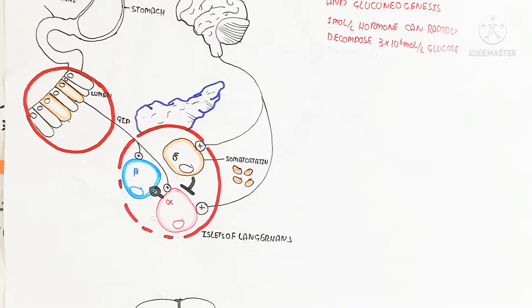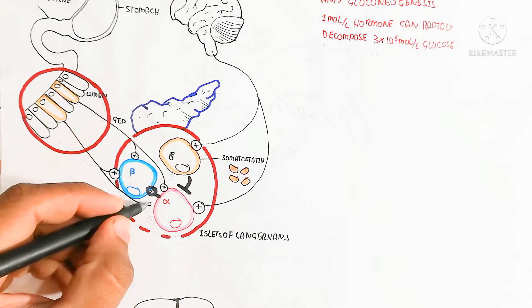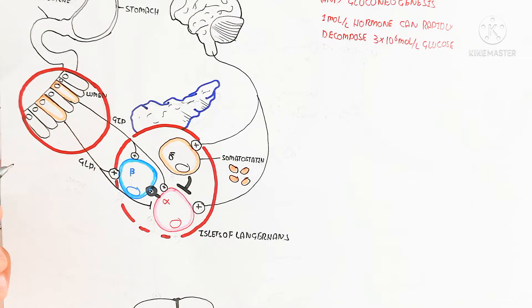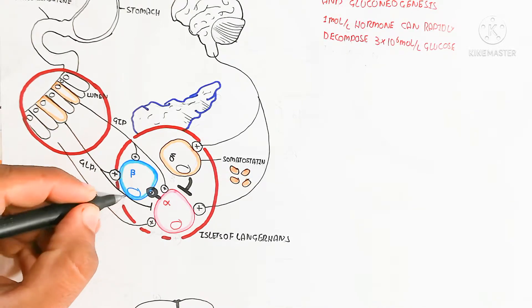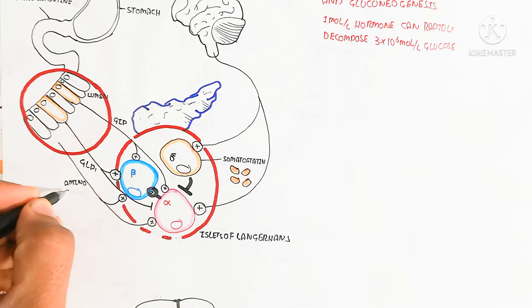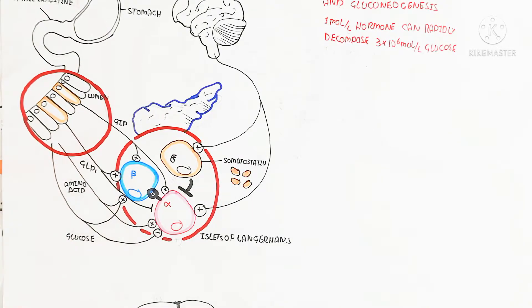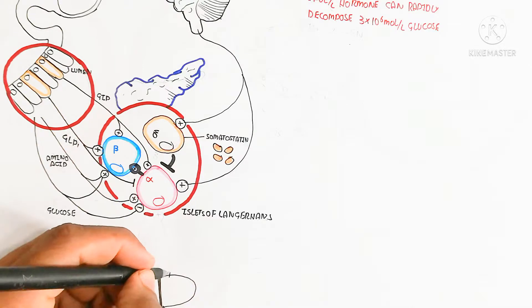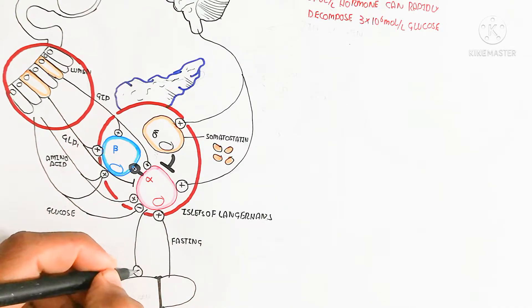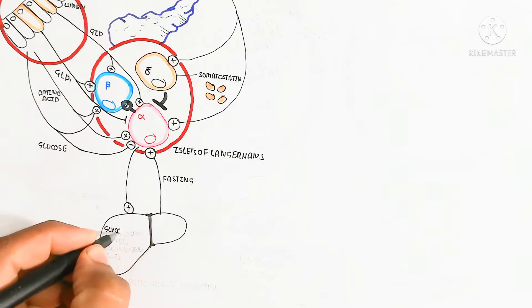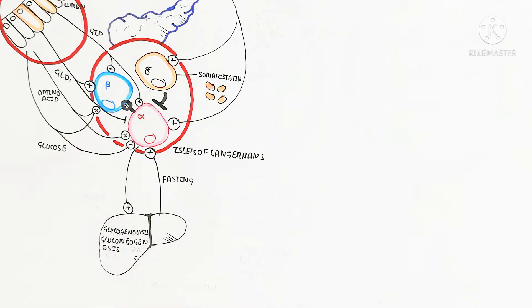In the fasting state, GIP will stimulate both alpha cell and beta cell. GLP-1, glucagon-like peptide-1, is stimulated by both amino acid and sugar concentration in the lumen. However, glucose and amino acids will basically inhibit, not stimulate, glucagon.